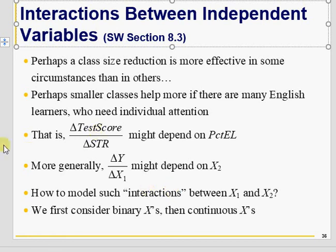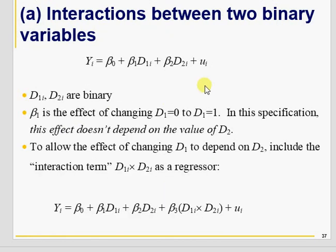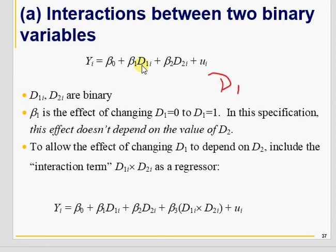Let's take the very first one: binary-binary. Why do we need interaction? As I have explained in a previous video, beta 1 is the effect of D1 on Y, holding the effect of D2 constant. Holding D2 constant means eliminating, partialing out, netting out, purging out the effect of D2 from D1 as well as from Yi. So for example, if I want to see the impact of graduation on earnings, D1 equals 1 if graduate, 0 if not.